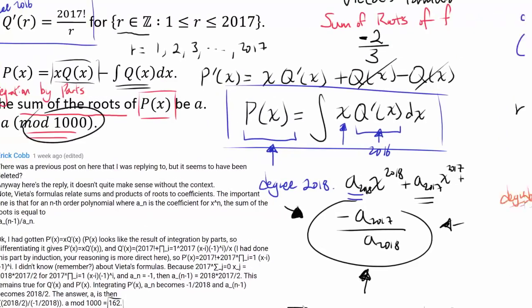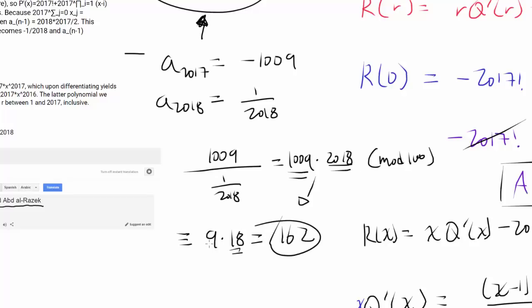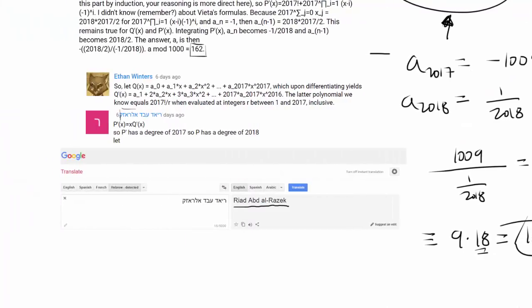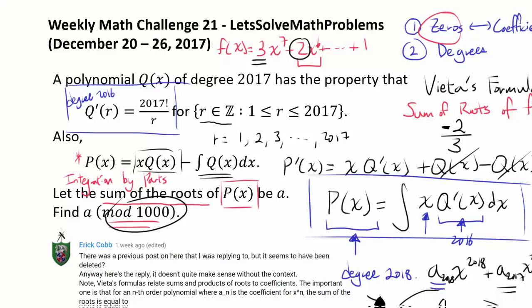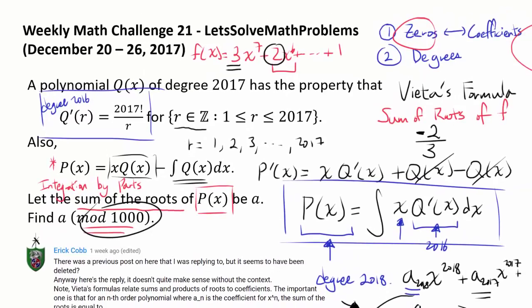We want 1009 × 2018 mod 1000. Since 1009 ≡ 9 (mod 1000) and 2018 ≡ 18 (mod 1000), we get 9 × 18 = 162. So our answer to this hardest weekly math challenge yet is 162. I hope you guys enjoyed it.